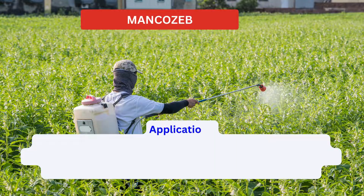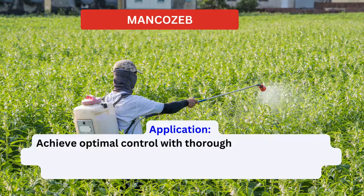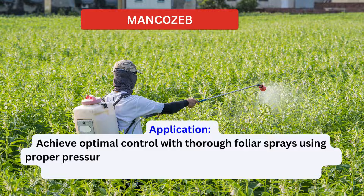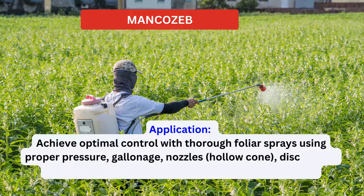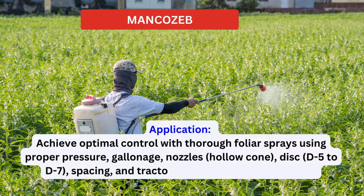Application: To achieve optimal disease control with Mancozeb, thorough coverage through foliar sprays is essential. This necessitates using proper spray pressure, gallonage per acre, nozzles — typically hollow cone disc, generally d5 to d7 — nozzle spacing, and tractor speed to attain complete and uniform coverage.